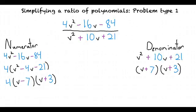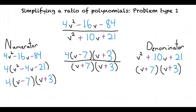From there, we can rewrite our fraction to 4(v - 7)(v + 3) divided by (v + 7)(v + 3).